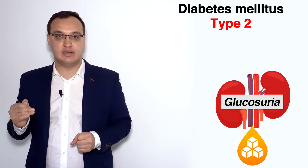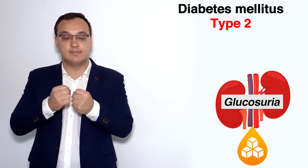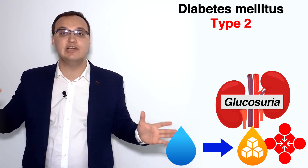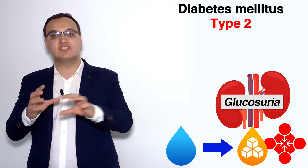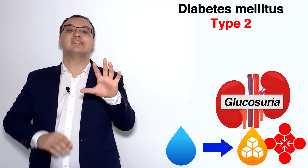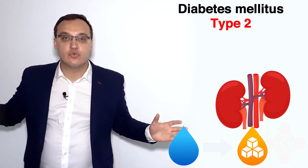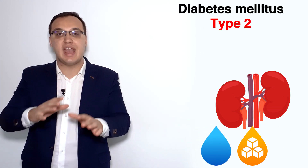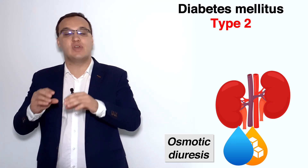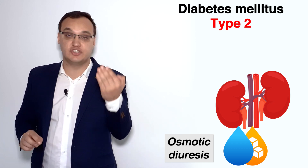If we have a lot of glucose in the urine, the concentration is increased. As we know, when concentration is high on one side — in this case the urine — water comes and tries to dilute it, because the body dislikes when the concentration is too high on one side and too low on the other. So water moves into the urine. We call this osmotic diuresis. Osmosis relates to the concentration on one side, with water always moving toward the more concentrated side.